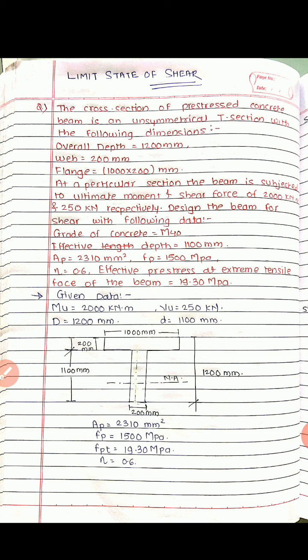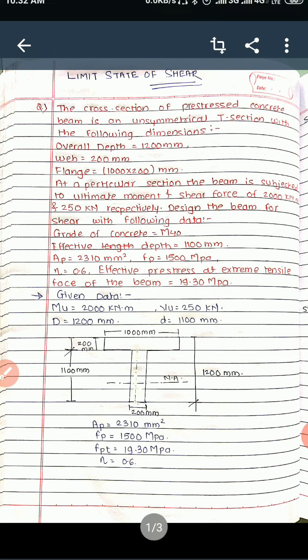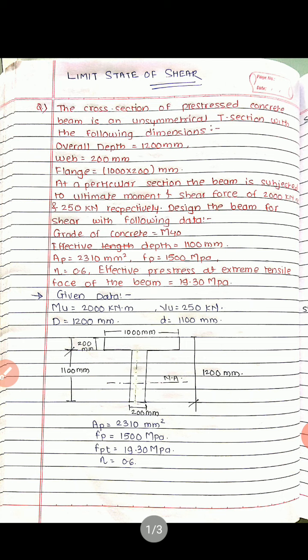We saw the criteria to calculate the ultimate shear resistance of a section, covering two parts: sections uncracked in flexure and sections cracked in flexure. If you have any doubts regarding how to calculate the shear resistance capacity of a section, just watch the previous video and then continue with this video. Here we will start with one numerical.